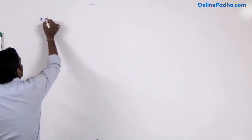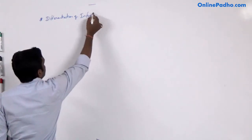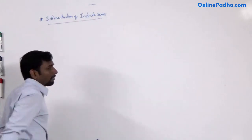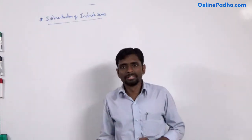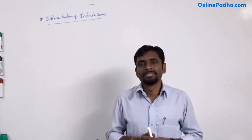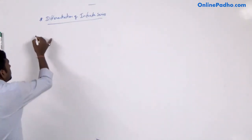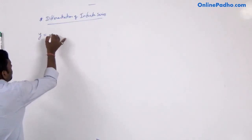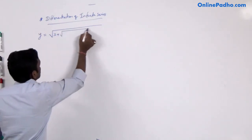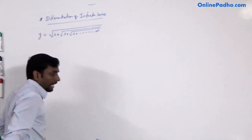We are discussing differentiation, and our next topic is differentiation of infinite series. How can we differentiate a function of infinite series? If you have a function in infinite series, you must convert it to an implicit function or logarithmic function first, then we can differentiate. For example, if you have y equal to square root of x plus square root of x plus square root of x, and so on up to infinite — this type of function is called an infinite series.